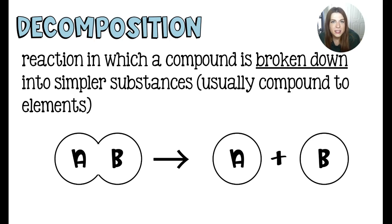The opposite of a synthesis is a decomposition where a large compound is going to be broken down into smaller pieces. A lot of the time we'll break it into its elements, but not always. So here we have AB breaking down to become A and B separately.